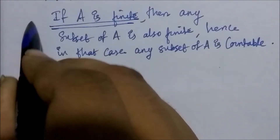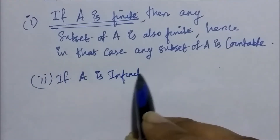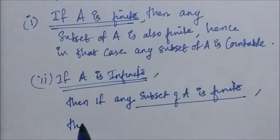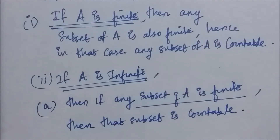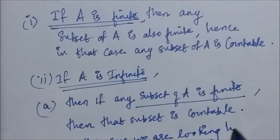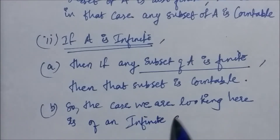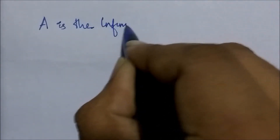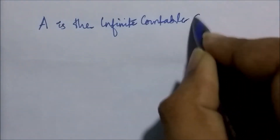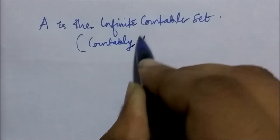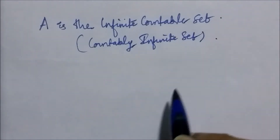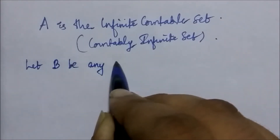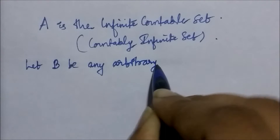In the next case, when A is infinite, if any subset of A is a finite set then that subset is going to be a countable set. These cases are trivial. The case we are looking at here is an infinite subset of A. So our statement can also be said as: any infinite subset of an infinite countable set is countable. Here A is the countably infinite set.